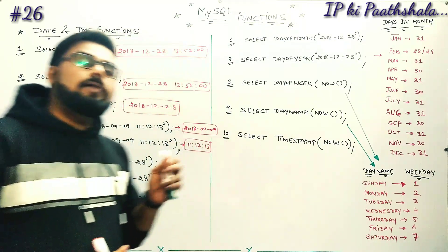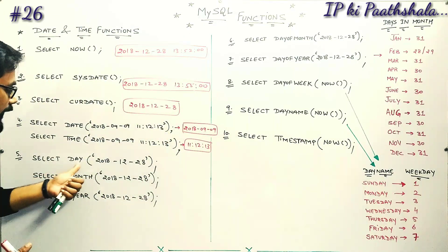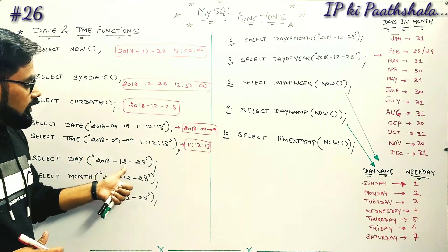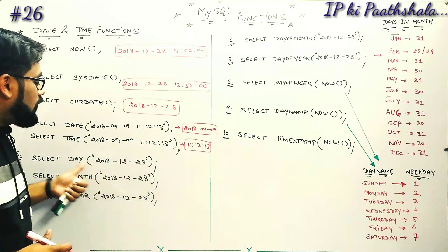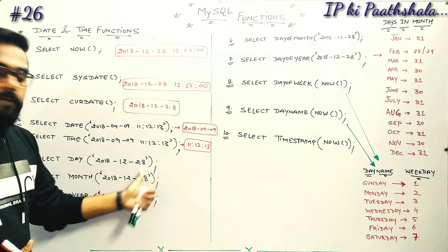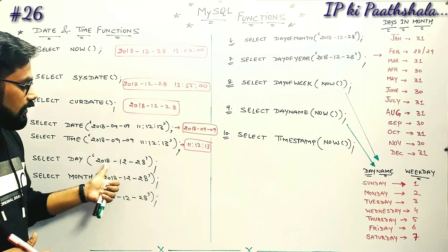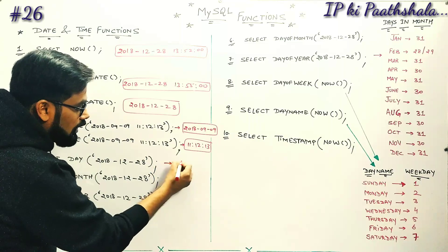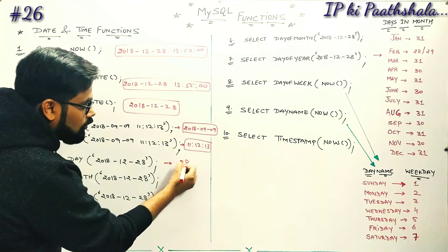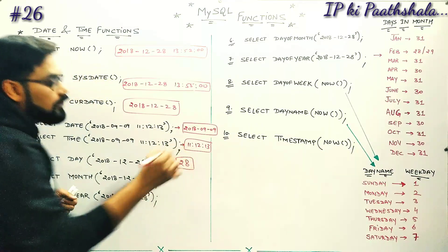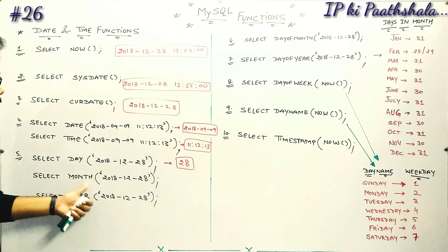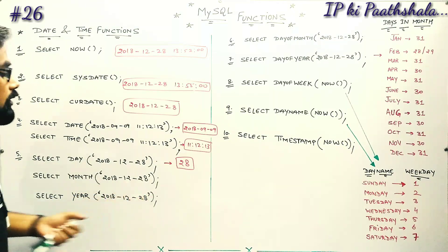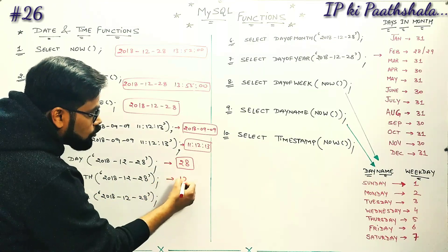Let's talk about our DAY() function. Using SELECT DAY() with a date like 2018-12-28, this is the day section. The year is 2018, month is 12, and particularly the day is 28. So 28 is the particular day returned. Next, SELECT MONTH() — month is a numeric value which is particularly 12 in this case. Minimum value is 1 and maximum value is 12.